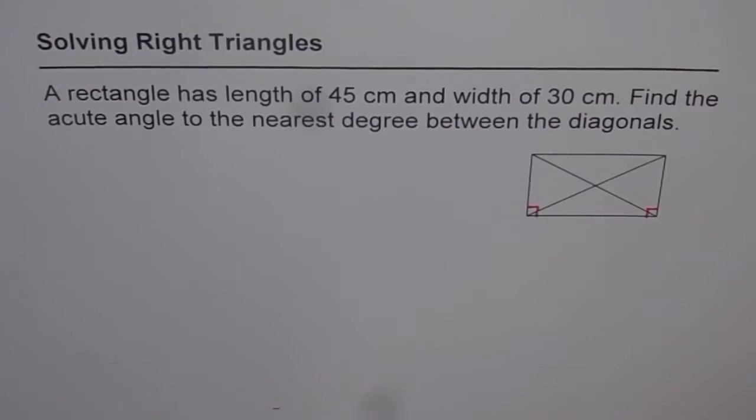Solving right triangles. A rectangle has length of 45 cm and width of 30 cm. Find the acute angle to the nearest degree between the diagonals.